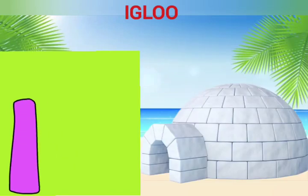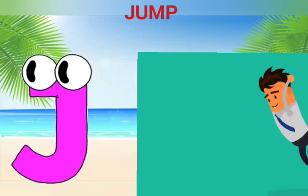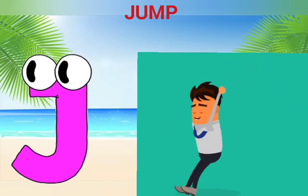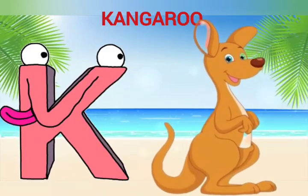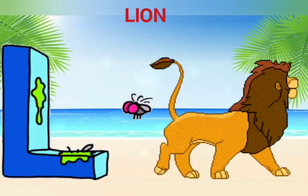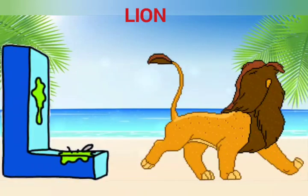I is for Igloo, I-I-Igloo. J is for Jump, J-J-Jump. K is for Kangaroo, K-K-Kangaroo. L is for Lion, L-L-Lion.